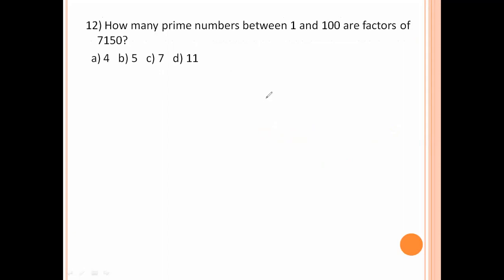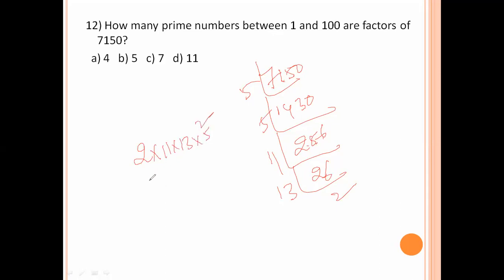How many prime numbers between 1 and 100 are factors of 7150? 5 into 1430, 5 into 286, 2 into 143, 11 into 13. So 2 into 11 into 13 into 5 squared. How many prime numbers were there? Between 1 and 100, 4 prime numbers: 2, 11, 13, 5, 4. Option number A is the right answer.